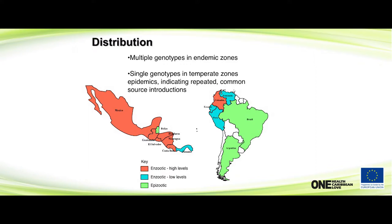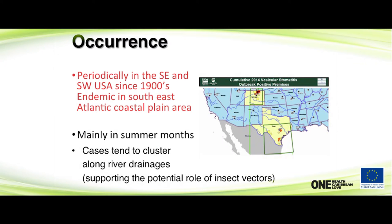Here we see the distribution in our region — enzootic high levels in the countries shown in brown, all the way down through Central America. We also see some low-level outbreaks in South America, in Venezuela and Peru, and then some epizootic outbreaks in Brazil and Argentina. There are multiple types of the virus present, especially in the endemic areas.